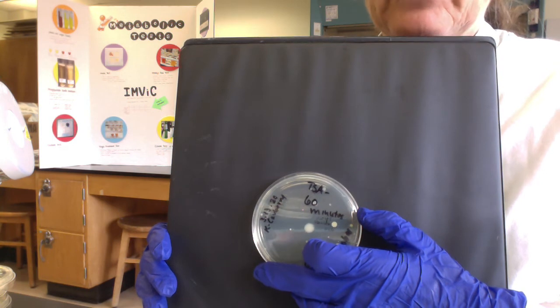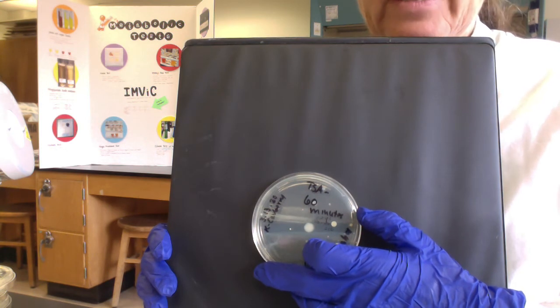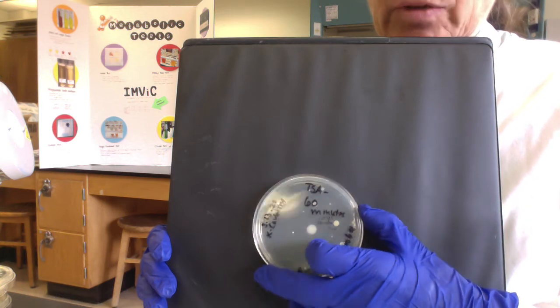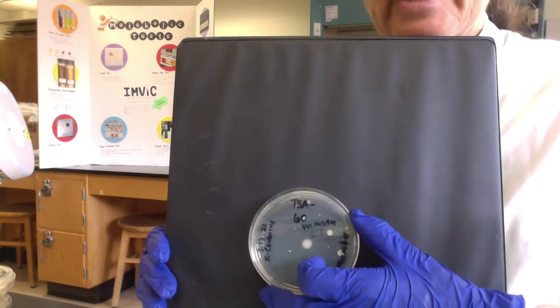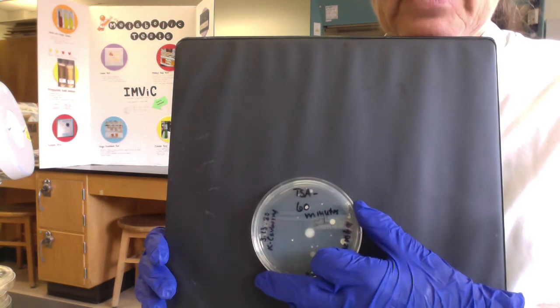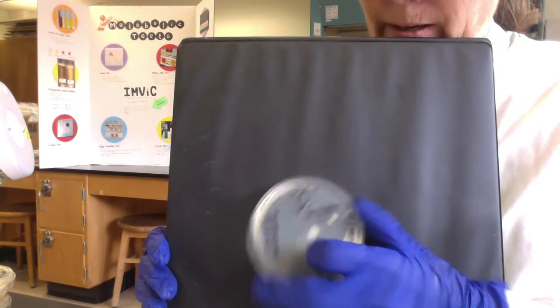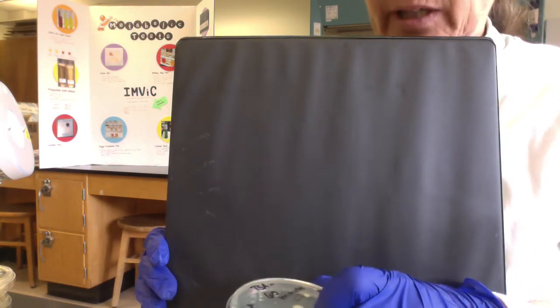So again, if I were to repeat this, I'd set up the plates on an empty bench and walk away, right? So there wasn't any human interference. So again, on our 60-minute plates, I got a total of 41 colonies. But the varieties did increase. So I got 10 different types of microbes growing on the 60-minute plate. So that was interesting. I only had five on the 30-minute plate.